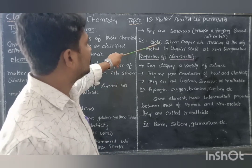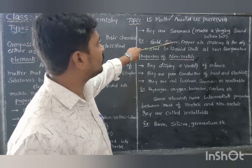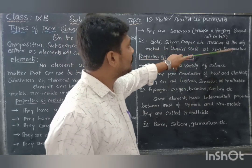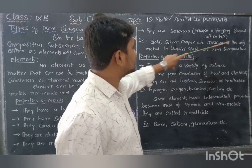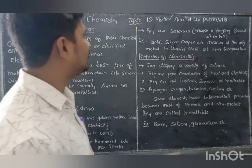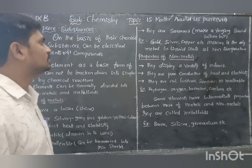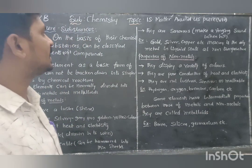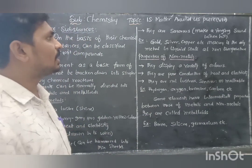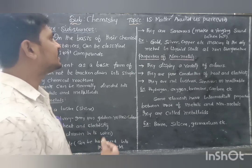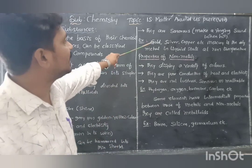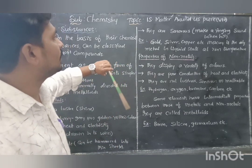Examples of metals are gold, silver, copper, etc. Mercury is the only metal in liquid state at room temperature — very important. Mercury is a metal, and at room temperature it is in a liquid state. That completes the topic of metals.